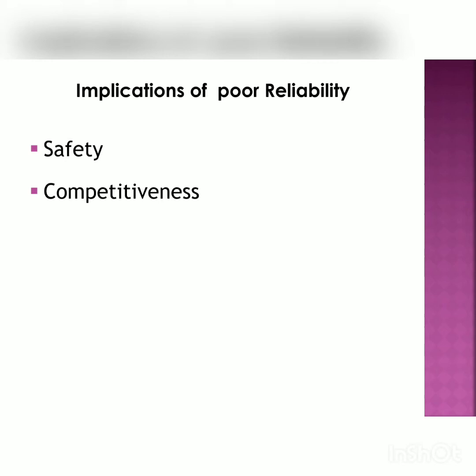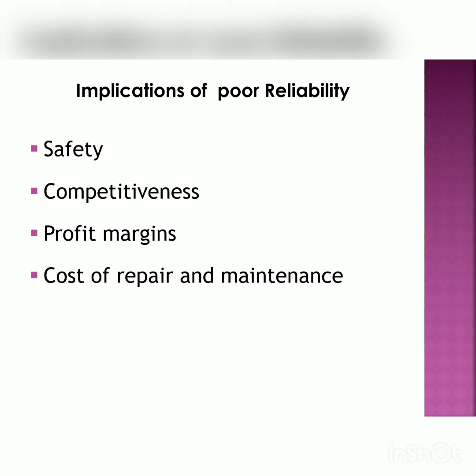Third, profit margins — for a reliable product, profit margins will always be high. Fourth, cost of repair and maintenance — if the product is reliable, as seen in the car example, the cost of repair and maintenance will be low. The reputation of the manufacturer will increase because of a highly reliable product, and the goodwill of the manufacturer may go down with a poor reliability product.